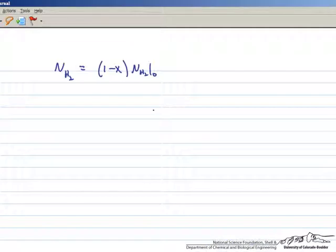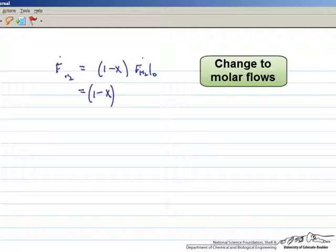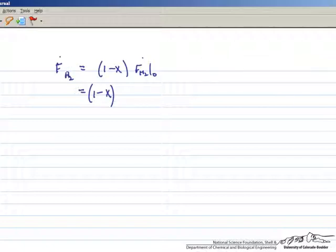The amount of hydrogen at any position in the reactor as a function of conversion equals the amount we started with times 1 minus the conversion. We can get the initial amount from the ideal gas law, which is a good assumption at these relatively low pressures.